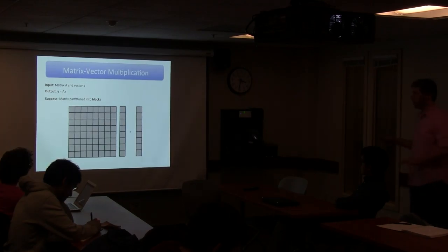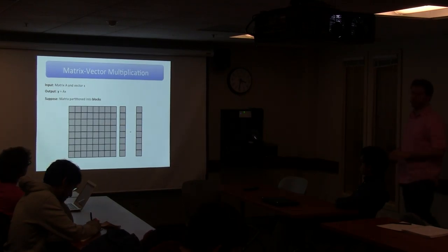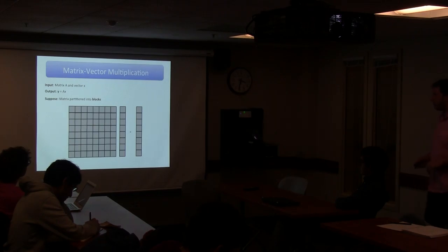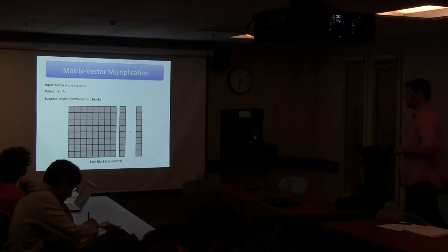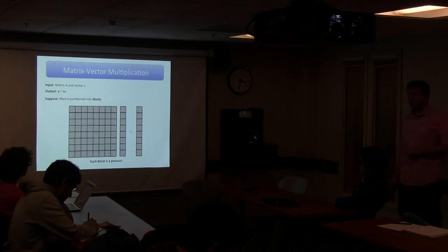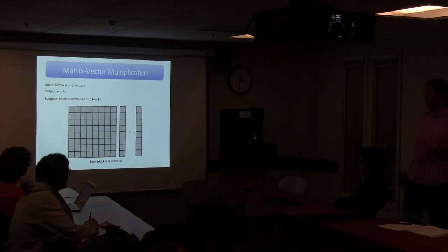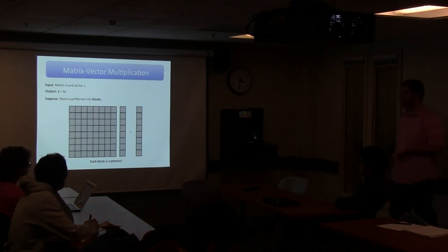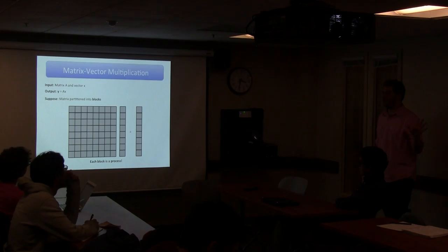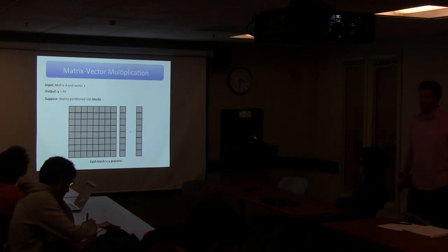Intuitively you'd expect the most scalability from a matrix-vector product with this block partitioning, at least for appropriate sizes of matrices and processors. We'll assume we have a square number of processors. Each block here is now going to be a process, and we want to do the matrix-vector product - we've combined the two approaches together.